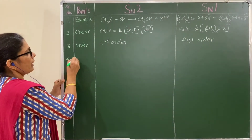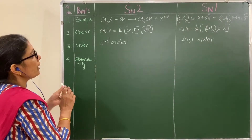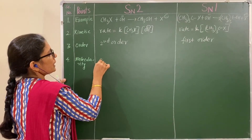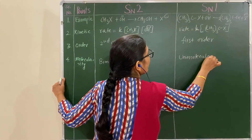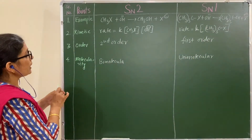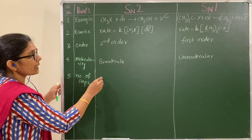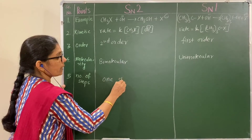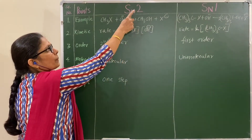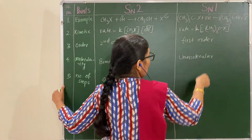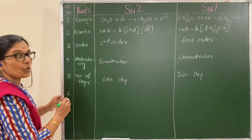Molecularity: SN2 is bimolecular — two molecules involved in the rate-determining step; SN1 is unimolecular — only one molecule involved. Number of steps: SN2 is a one-step mechanism; SN1 involves two steps.